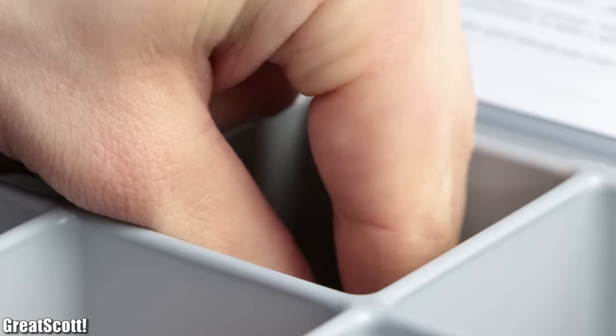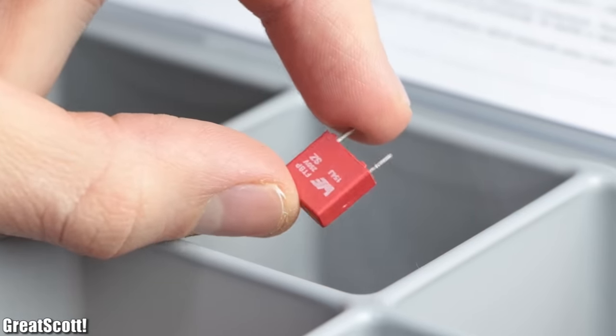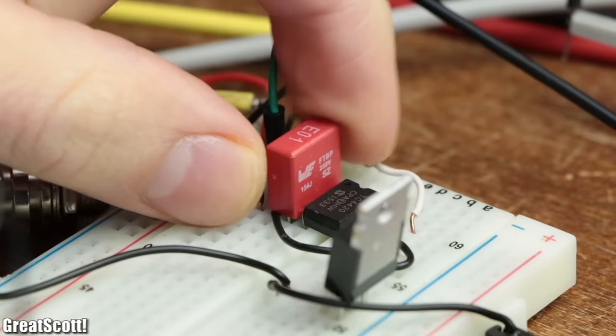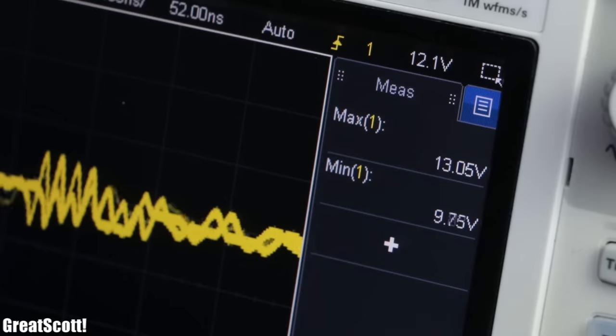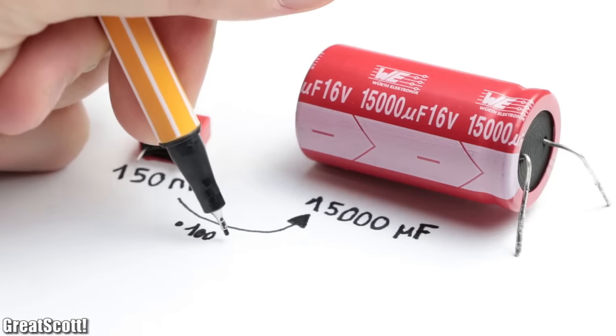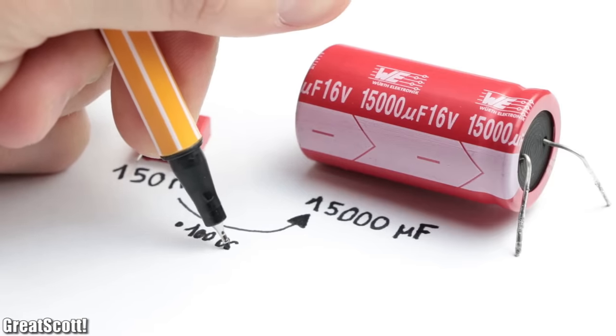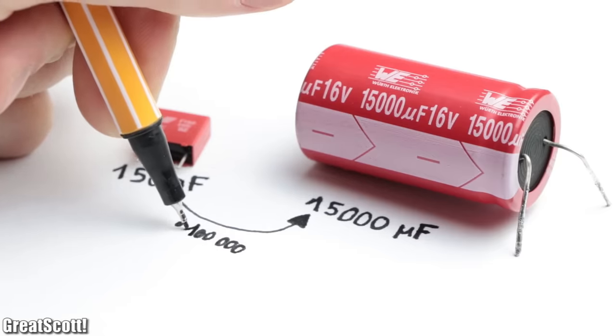Out of curiosity though, I also tried out a small 150 nF film capacitor as a decoupling capacitor, which worked even better by decreasing the peaks to 13 and 10 volts. But why does such a puny small film cap, whose capacity is 100,000 times smaller than the beefy electrolytic capacitor, works better?